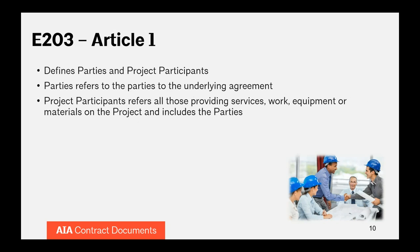In the definitions, we define parties versus project participants. Because E-203 gets attached to many different agreements on a project, parties refers to the two parties to the underlying agreement that E-203 is attached to. So in an owner-contractor agreement, parties means the owner and contractor; project participants would be everyone else — the architect, subcontractors, and so on. In an owner-architect agreement, the owner and architect are the parties, and everyone else are project participants.